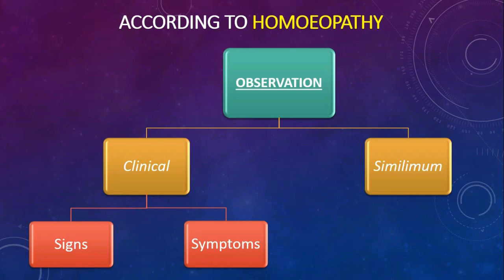According to homeopathy there are two types of observation: clinical and similimum. Clinical also has two sub-types — science and symptoms — whereas similimum contains characteristic, rare and peculiar symptoms.